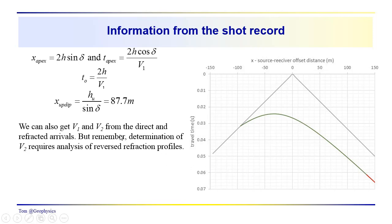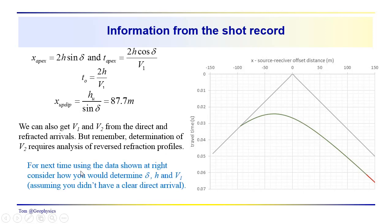In the problem I'm going to leave you with, we're going to assume that we don't know V1 and we don't need to know V2. So the question is: from the data shown, can you determine the dip, the thickness, and the velocity — assuming you don't have a clear direct arrival? You can use the direct arrival just to cross-check your results. You should be able to do this problem just using T-apex, x-apex, and the intercept time, with a dataset that gives different numbers than those used for illustration.